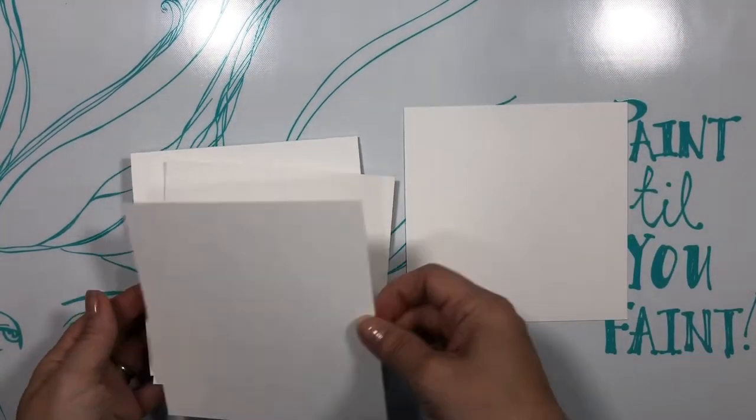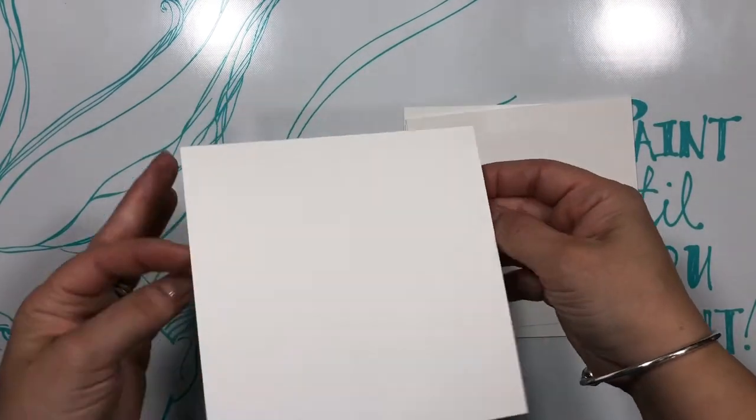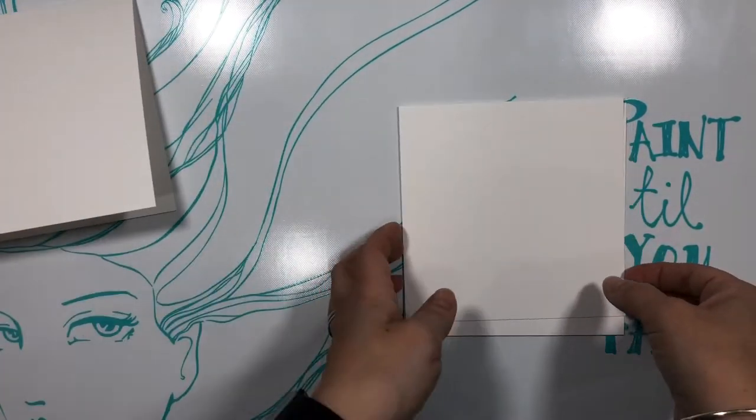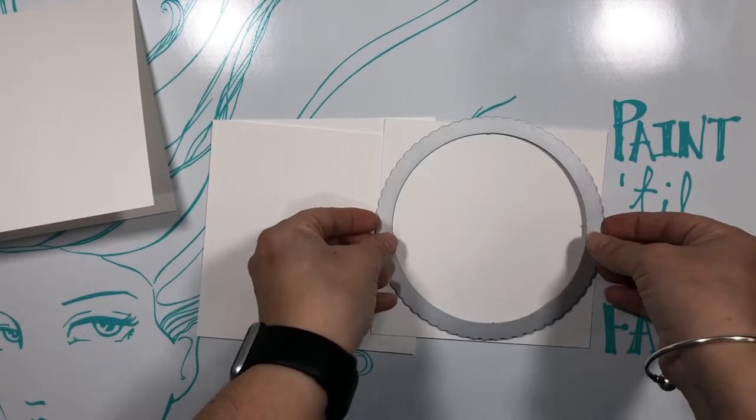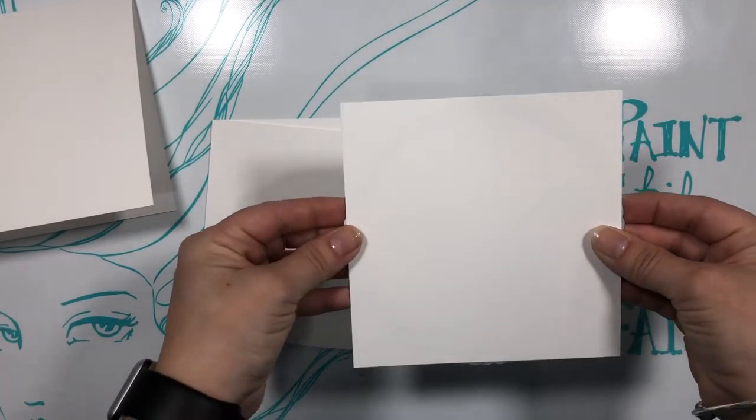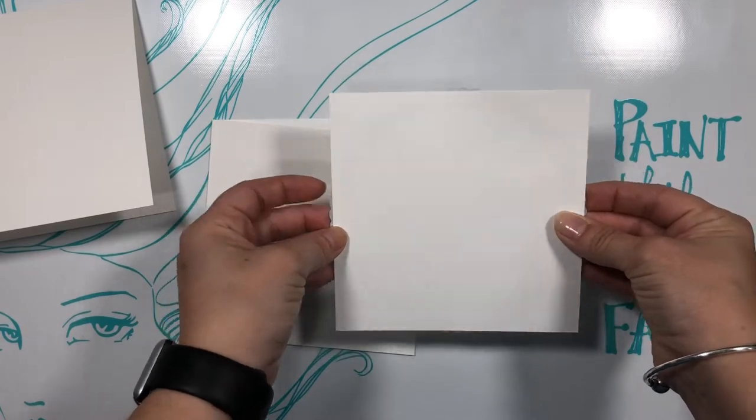So to begin I have pre-cut all the panels for my card so I have three five by five square panels as well as a five by five card base. Next I took the largest stitch scallop circle die and die cut it from one of the panels.